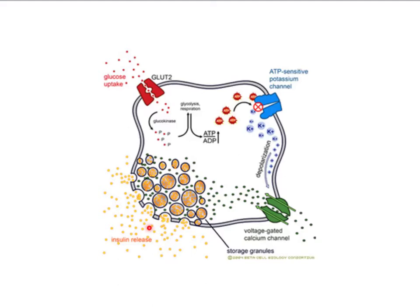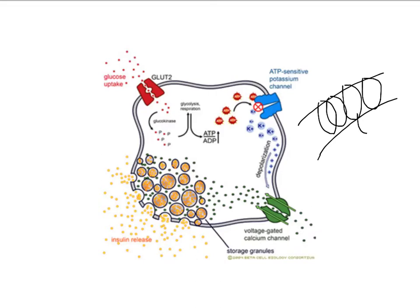Remember that the metabolic actions of insulin are counteracted by glucagon and epinephrine. Both of these receptors are coupled to stimulatory G proteins, which activate adenylate cyclase, then increase cyclic AMP and activate protein kinase A. Insulin receptors are not G protein receptors — they are tyrosine kinase receptors, meaning that they have a phosphorylation activity on the cytoplasmic side of the protein. Insulin will bind to the alpha subunit of the protein and will propagate a signal through the cell.